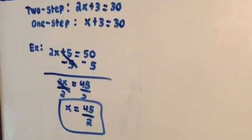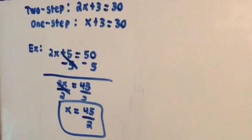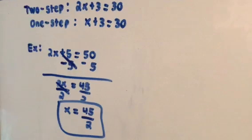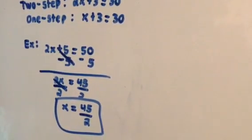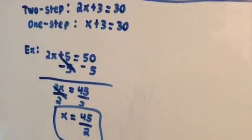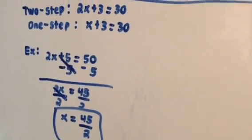And then that's your answer. And then when you do more of these two-step equations, you notice that the answers are improper fractions. Improper fractions are when the numerator is bigger than the denominator.